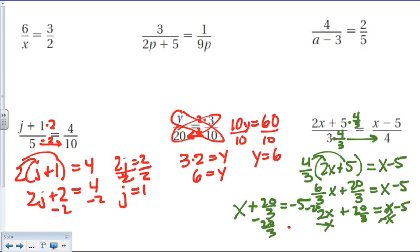And then if I subtract 20 over 3, minus 20 over 3, I'm going to get x equals, so I have to make some fractions here. So common denominator would be 3, so 15 over 3. And then minus 20 over 3 becomes negative 35 over 3.